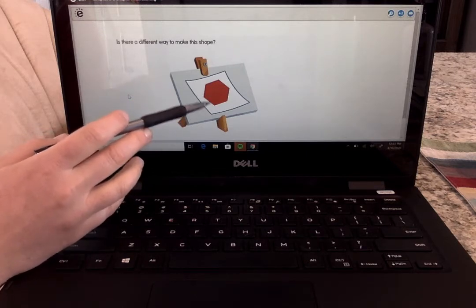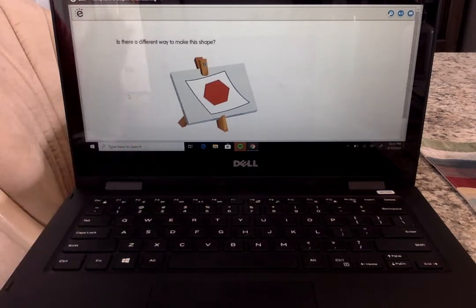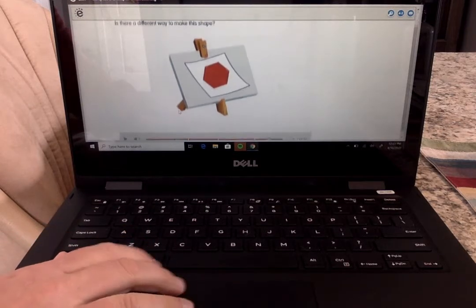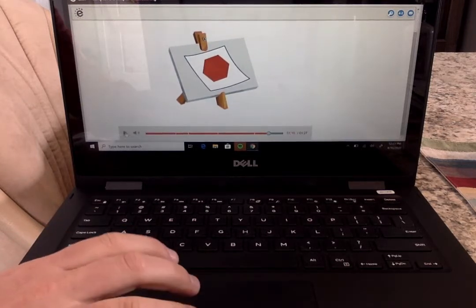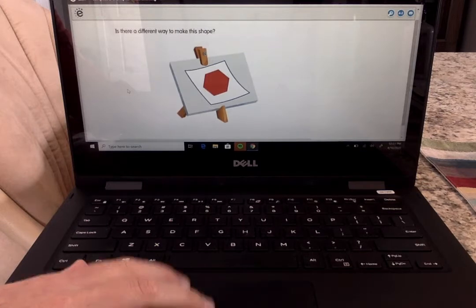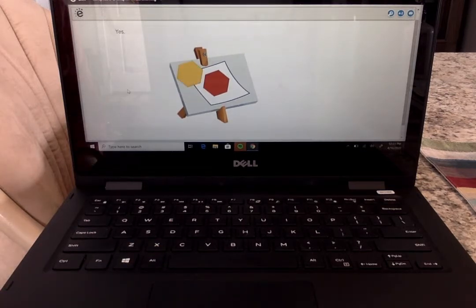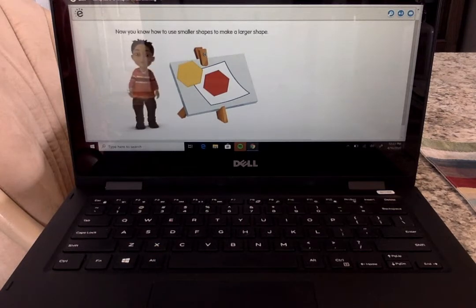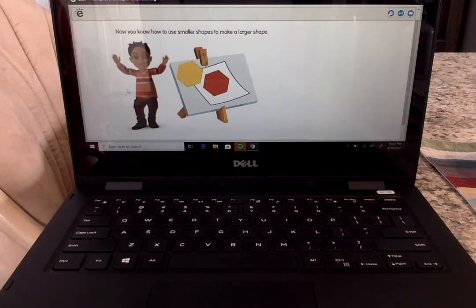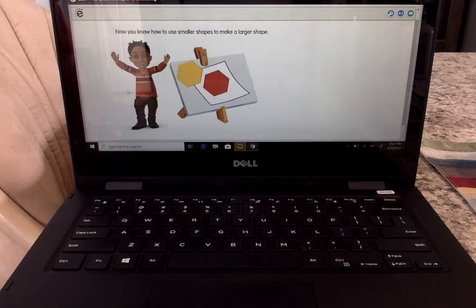You could use triangles to make a hexagon. Let's see what they say. Yes. Now you know how to use smaller shapes to make a larger shape. Yay!